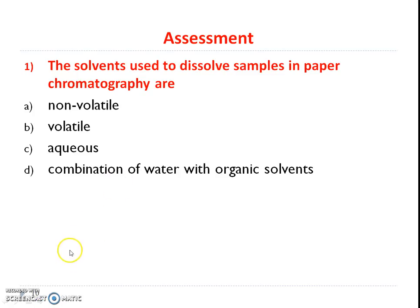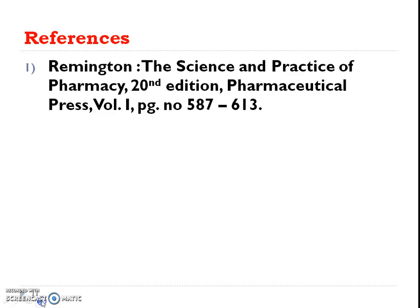Question for assessment: The solvents used to dissolve the sample in paper chromatography are — (A) nonvolatile, (B) volatile, (C) aqueous, or (D) a combination of water with organic solvent.